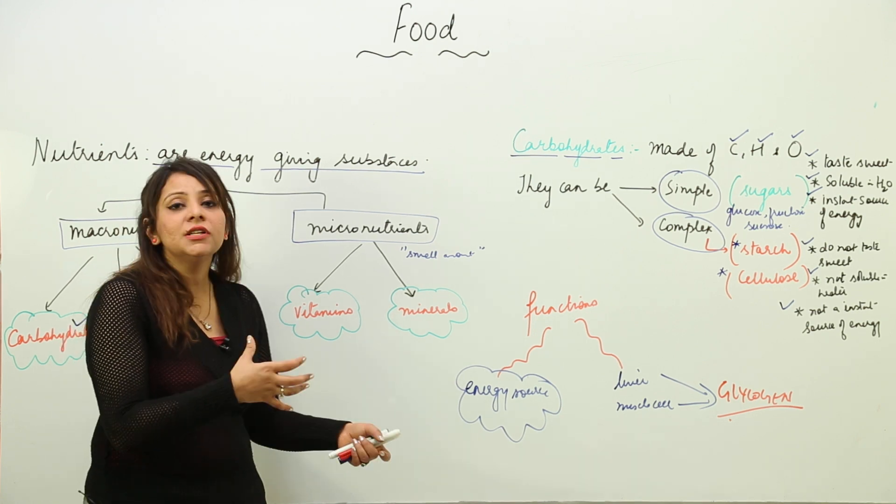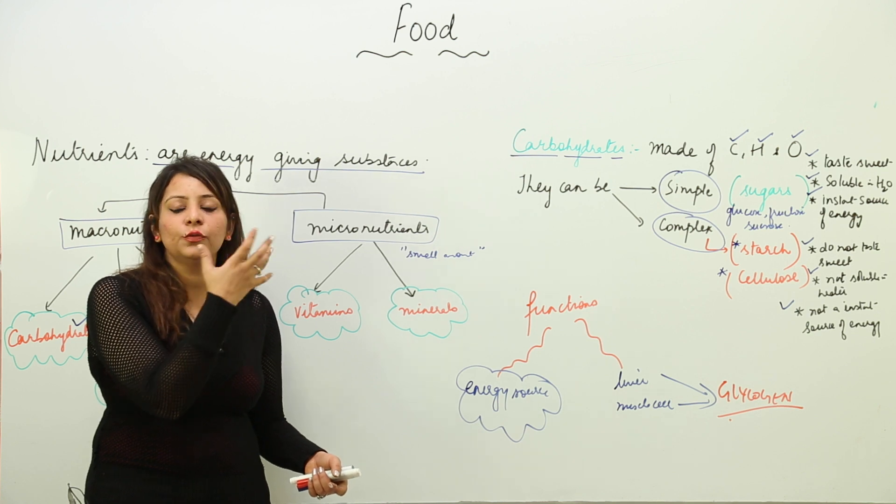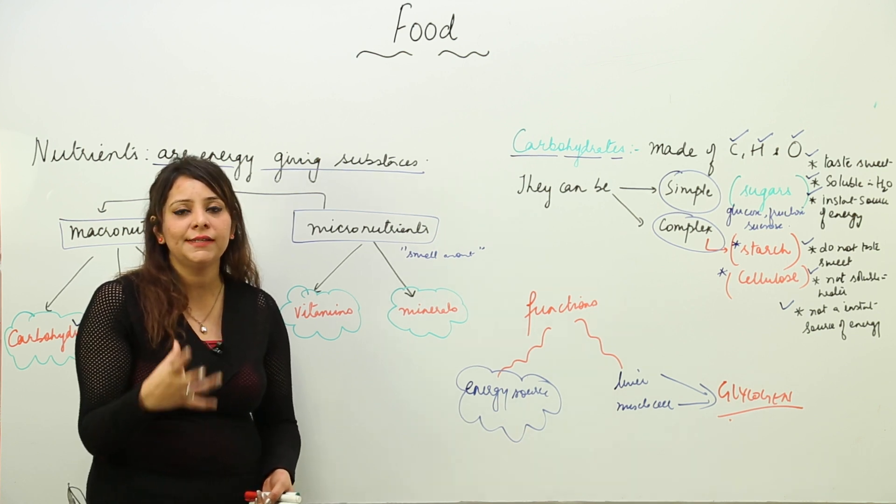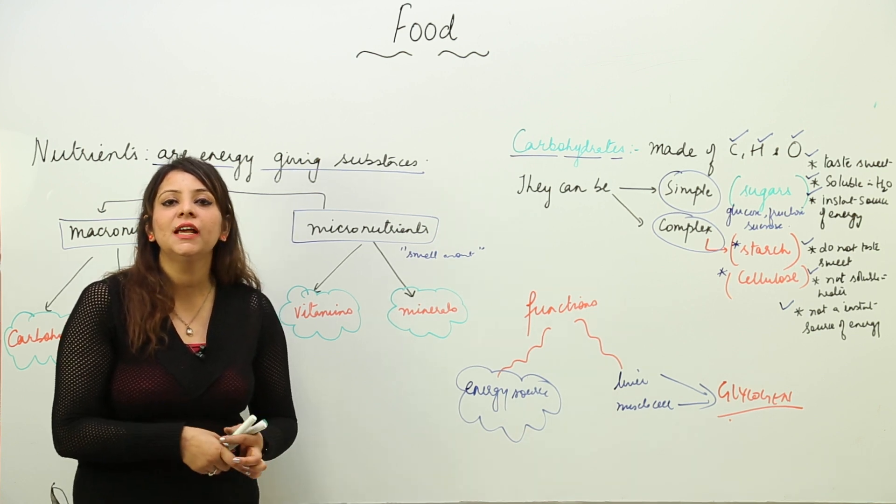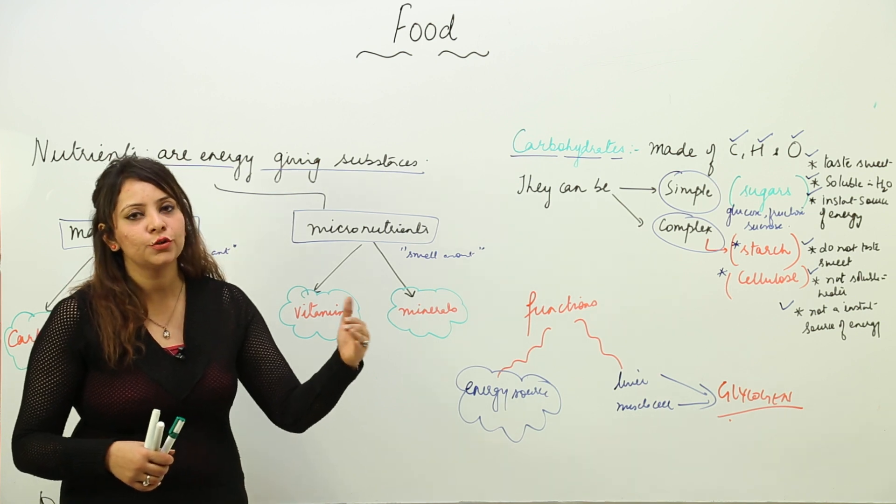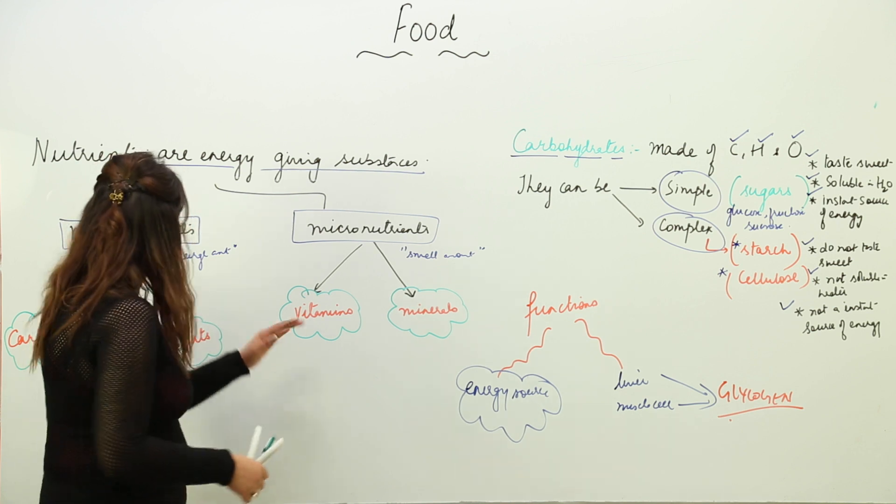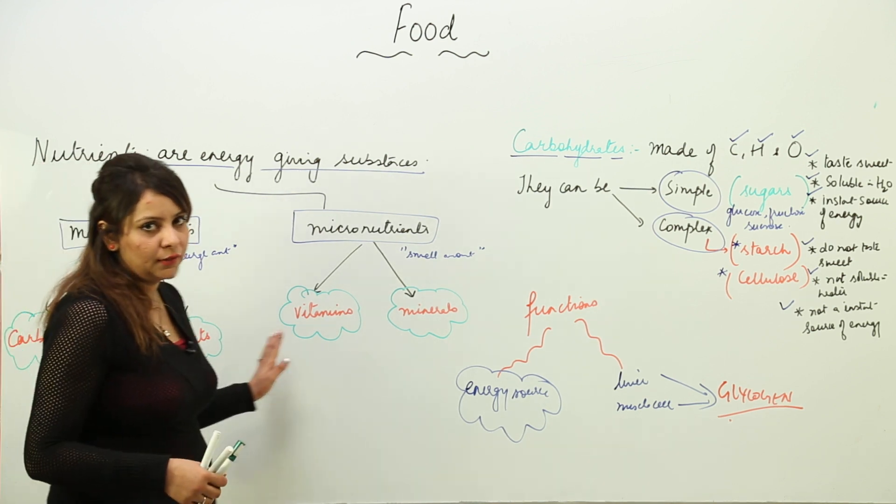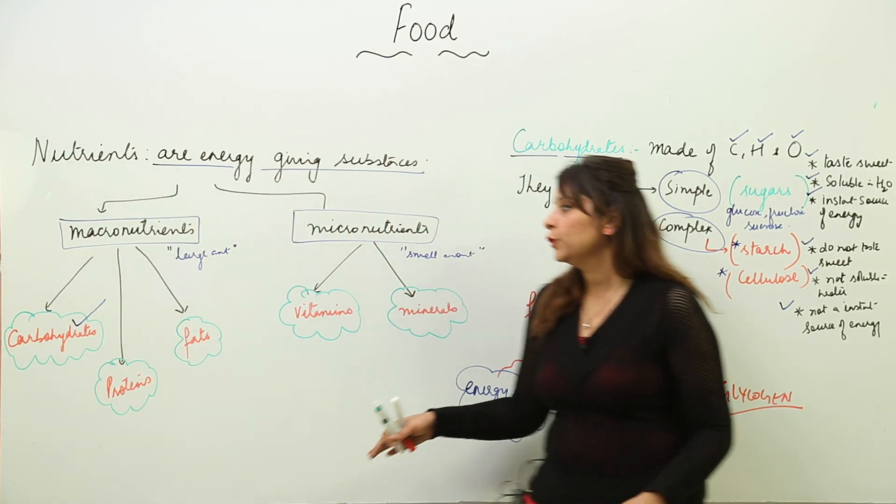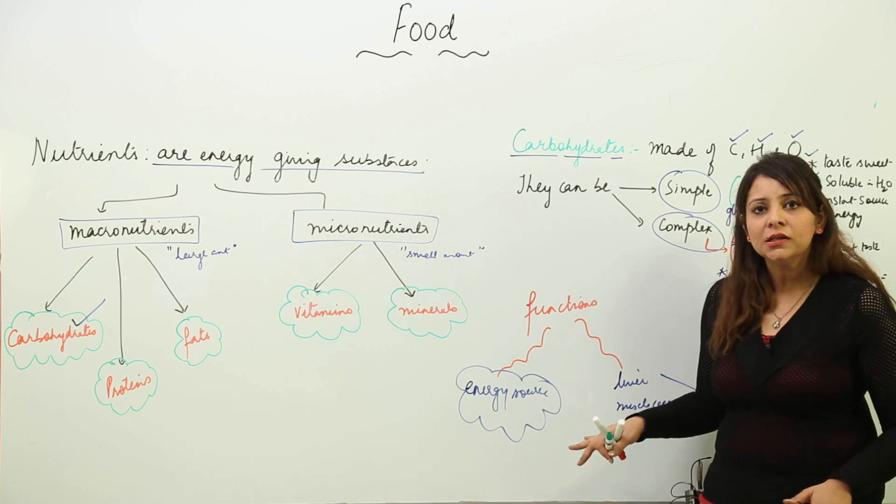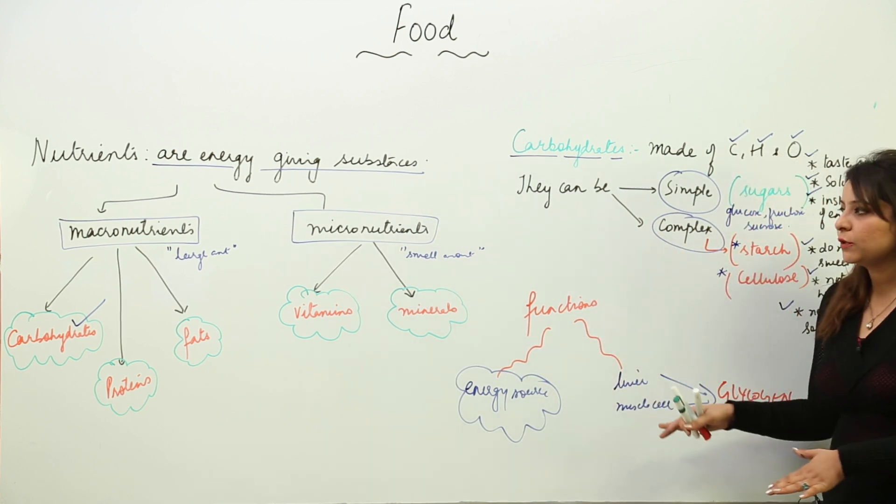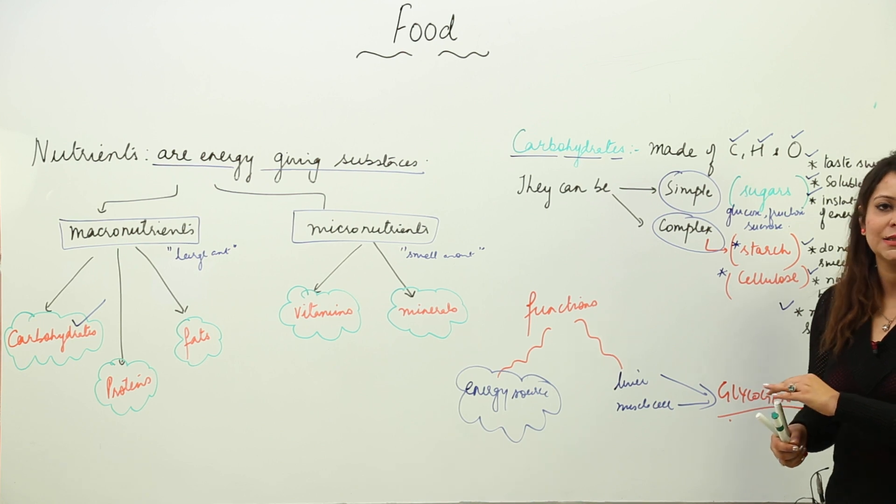It is an emergency source. We have excess carbohydrate stored in liver or muscle cells where they convert into glycogen and get stored up. This was the carbohydrate. I think you got it, so just write it down, try to learn it. I'm starting with another nutrient - fats.